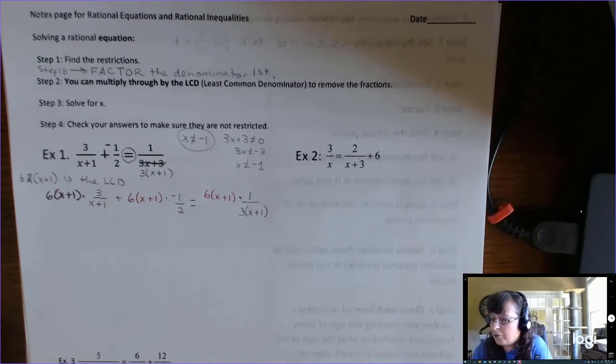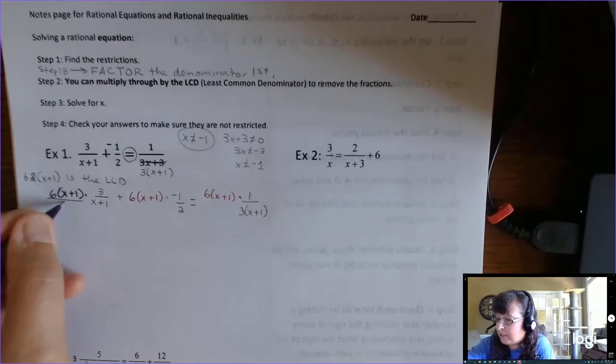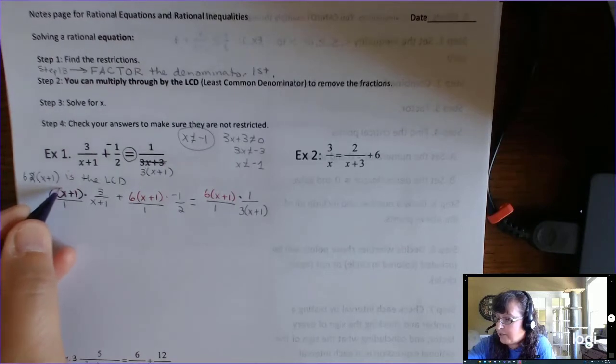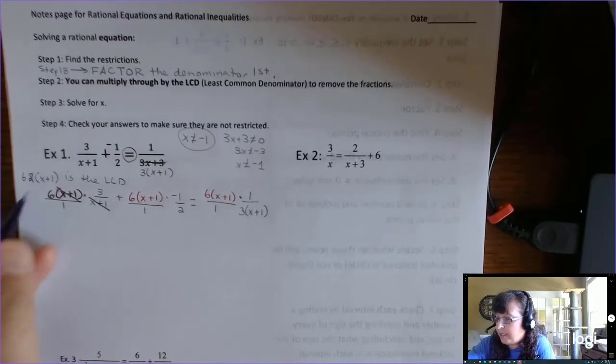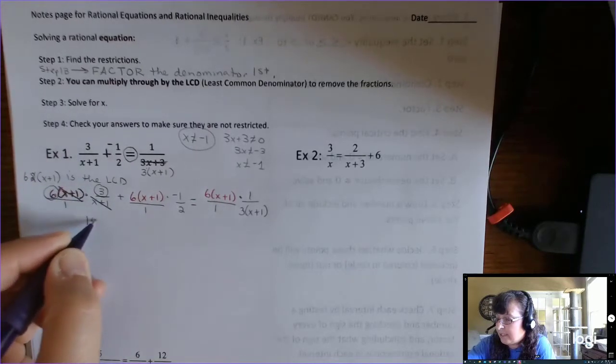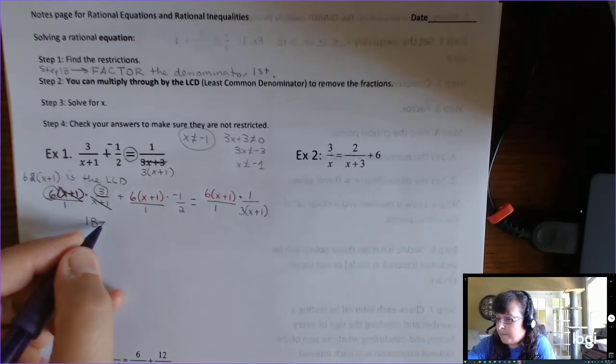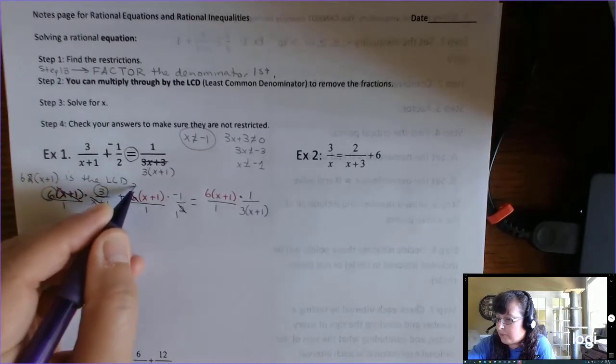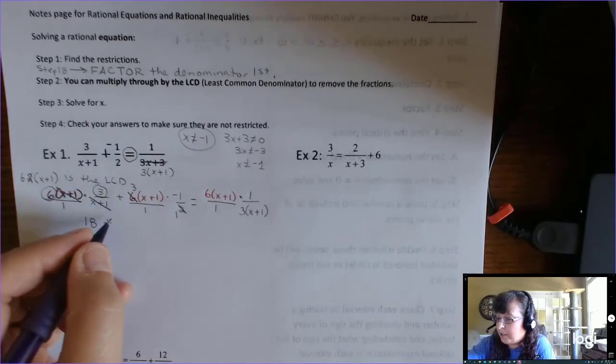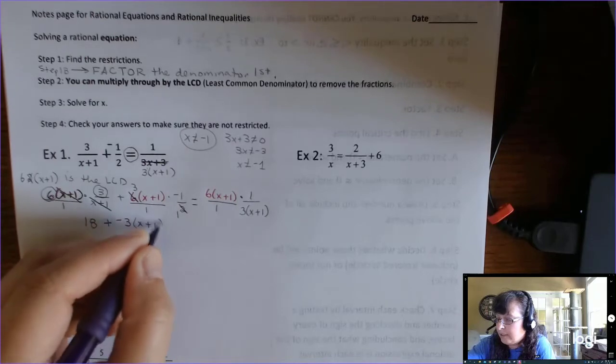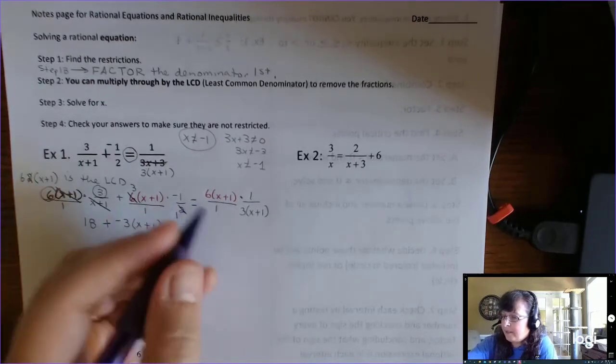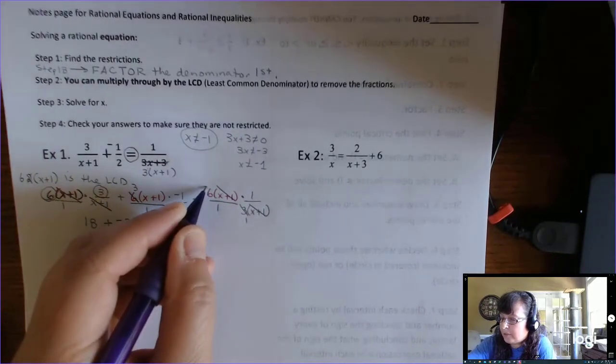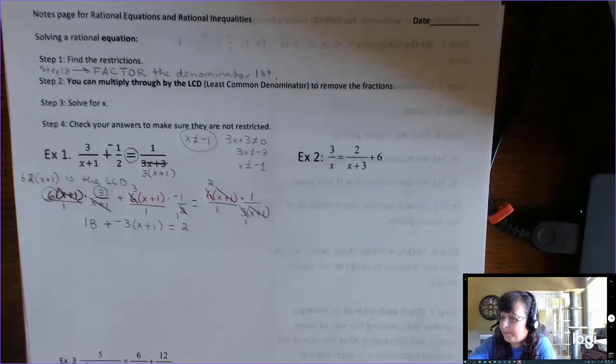Okay, so this is going to get multiplied by 6 times x plus 1. This negative 1 half is getting multiplied by that 6x plus 1. And on the right side, you're multiplying by 6 times x plus 1. Alright, so step 2, you can multiply through by the LCD. And the reason that this works is you can make anything a fraction. So what's going to happen is things are going to cross cancel. Your fractions are going to go away. Okay, this x plus 1 factor cancels with that x plus 1 factor and you're left with 18 over 1, which is this 18. Plus, this 2 goes into 2 once and 2 goes into 6 3 times. And 3 times negative 1 is negative 3 times x plus 1. No more fraction. This x plus 1 cancels with that x plus 1. This 3 goes into 3 once. 3 goes into 6 twice. And you're left with 2 times 1 is 2. No more fractions.